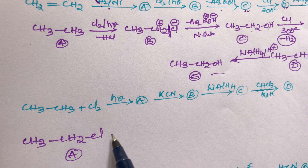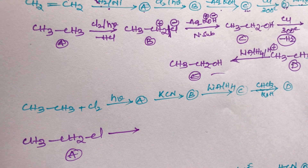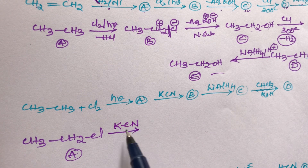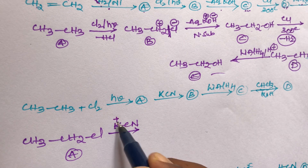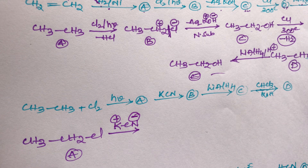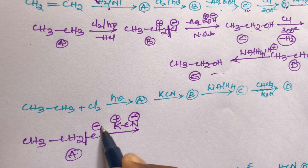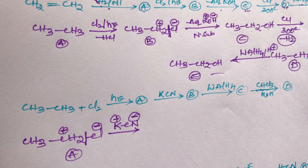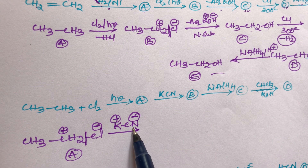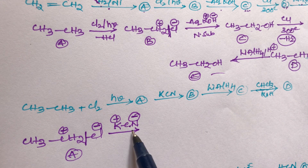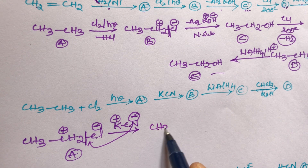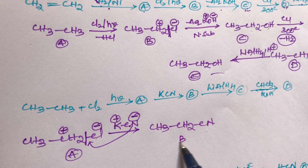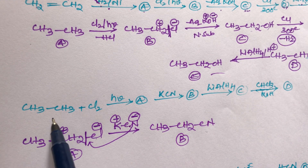When compound A reacts with potassium cyanide (KCN), KCN has an ionic bond — K⁺ and CN⁻. CN⁻ is a strong nucleophile. The C–Cl bond breaks: Cl⁻ leaves and CN⁻ replaces it. This conversion of A to B belongs to nucleophilic substitution reaction — Cl⁻ is replaced by CN⁻ (another nucleophile). We get CH₃CH₂CN — ethyl cyanide — as compound B.